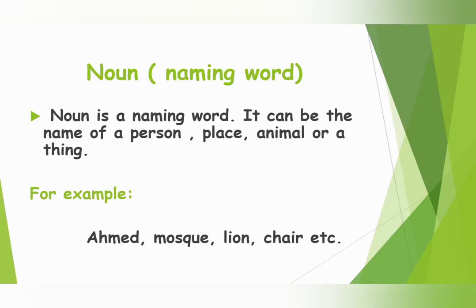Look at the examples. Ahmad is the name of a boy, it is the name of a person. Mosque is the name of a place. Lion is the name of an animal. Chair is the name of a thing. So Ahmad, Mosque, Lion and Chair are some examples of noun.